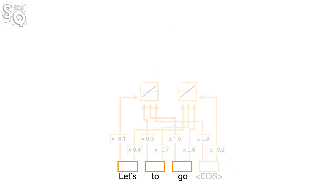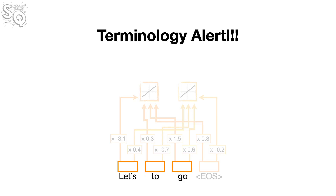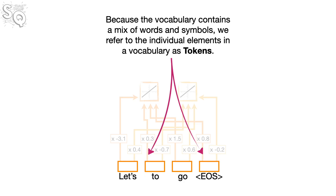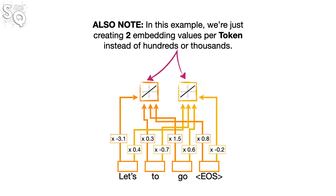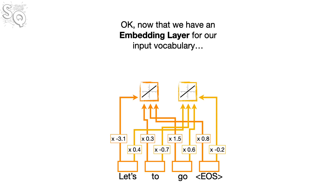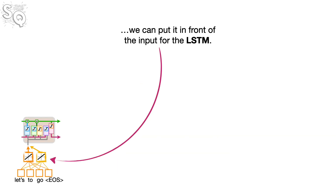It's the dreaded terminology alert! Because the vocabulary contains a mix of words and symbols, we refer to the individual elements in the vocabulary as tokens. Also note, in this example we're just creating two embedding values per token instead of hundreds or thousands. Now that we have an embedding layer for our input vocabulary, we can put it in front of the input for the LSTM.